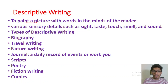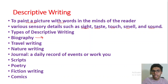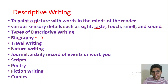In descriptive writing we use various sensory details such as sight, taste, touch, smell, and sound. If you talk about the types of descriptive writing, mostly we talk about people. Biographies are basically books written about the life events of people — like if you are writing about Quaid-e-Azam, starting from birth until his last day, covering all major accomplishments and major events.